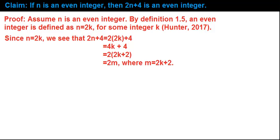Since n equals 2k, we see that 2n plus 4 equals 2 times 2k plus 4 equals 4k plus 4. And now we can factor out a 2 to get 2 times 2k plus 2. And let's let m be 2k plus 2, so that gives us 2m at the very end here.